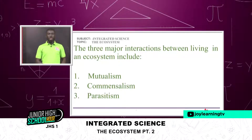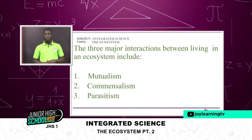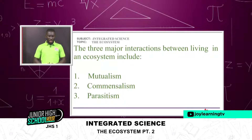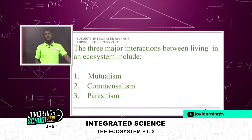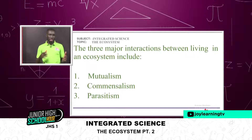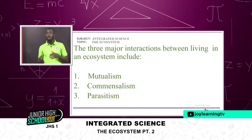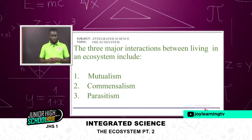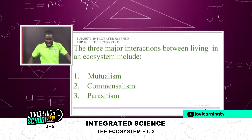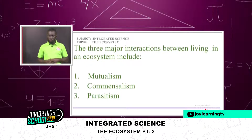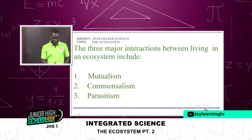Number three: what are the three major interactions between living things in an ecosystem? What are the three main themes under which we can classify these interactions? We have mutualism as number one, commensalism as number two, and parasitism as number three. These are the three main interactions that exist between living organisms in every ecosystem.